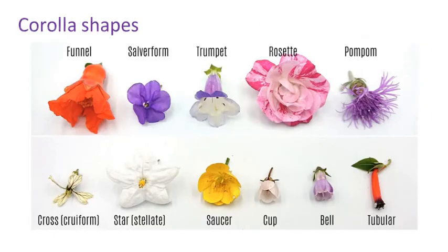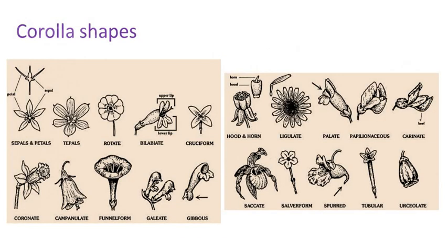This slide shows different names given to flowers depending on their shapes. For instance, funnel-form flowers have a funnel-shaped corolla, cup-form has a cup-like corolla, and so on. This slide also shows some more forms of corolla.